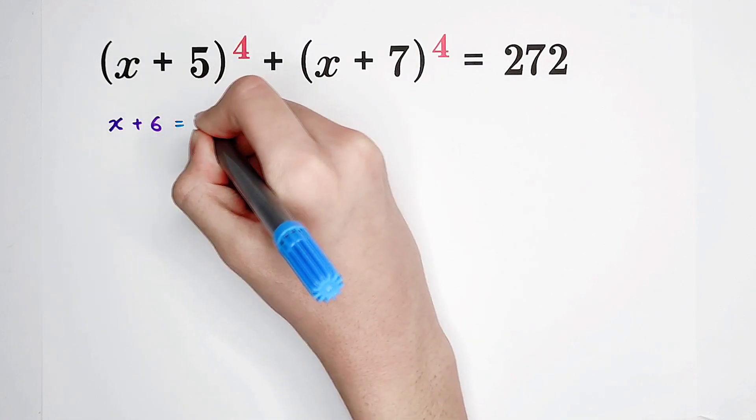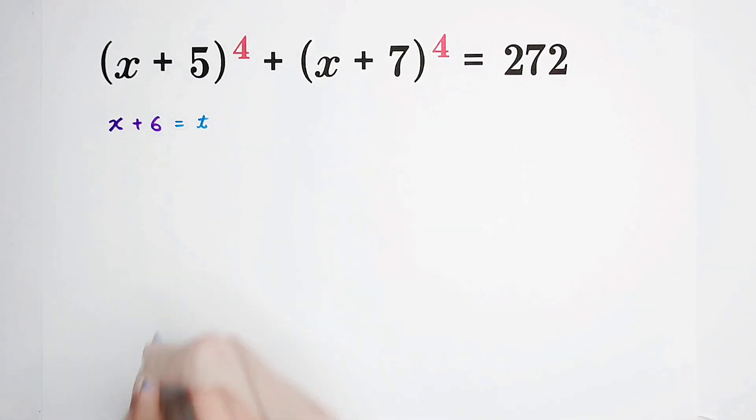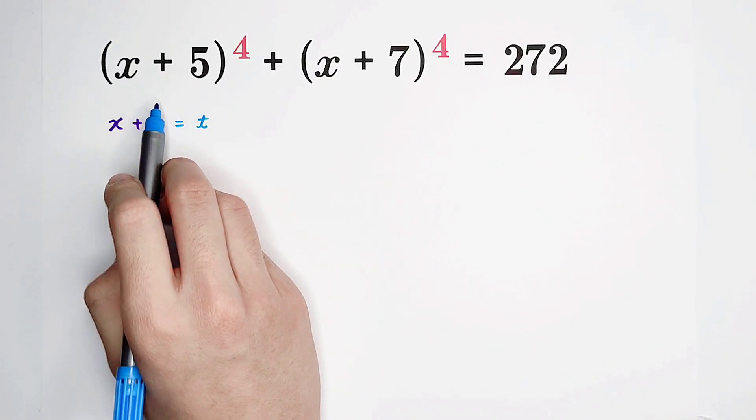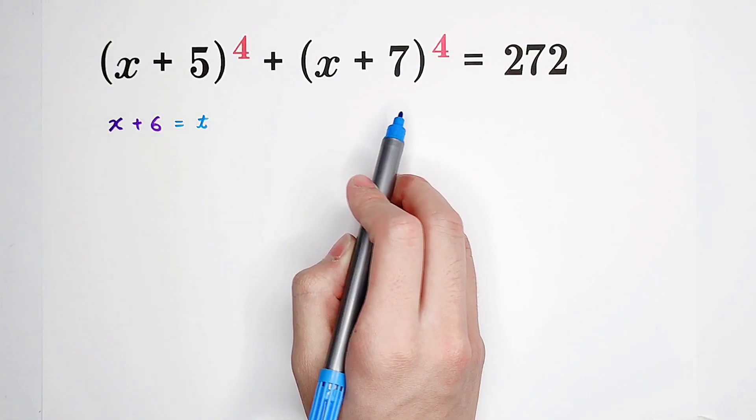If we let it be t, then x plus 5 will be t minus 1, x plus 7 will be t plus 1.